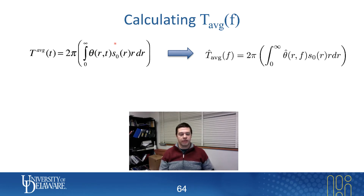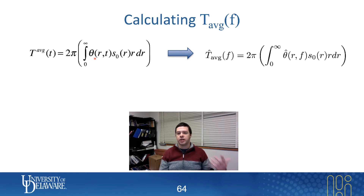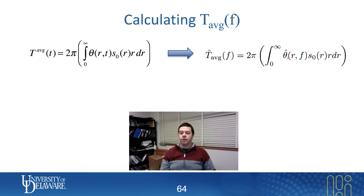Looking at this expression, the only thing in it that's a function of time is the surface temperature itself, theta. Since integrals can be done in any order, if I take the Fourier transform of this I can just replace the function of time with a function of f. So this is the Fourier transform in time of the surface temperature — it still maintains its spatial positioning, but it's in the Fourier domain.